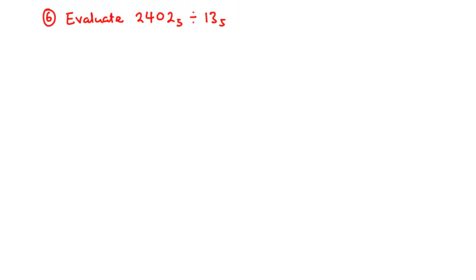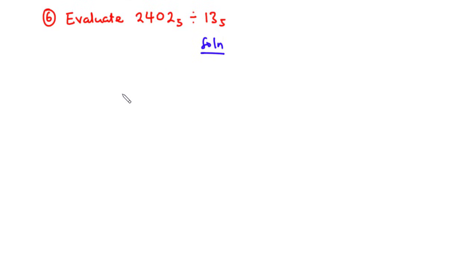Now, to example 6. We are going to evaluate 2402 base 5 divided by 13 base 5. For division, it is very confusing to do that straight away. However, the best thing to do is to convert all these values to base 10, then perform the division. After that, we convert the result back to base 5. So that is exactly what we are going to do.